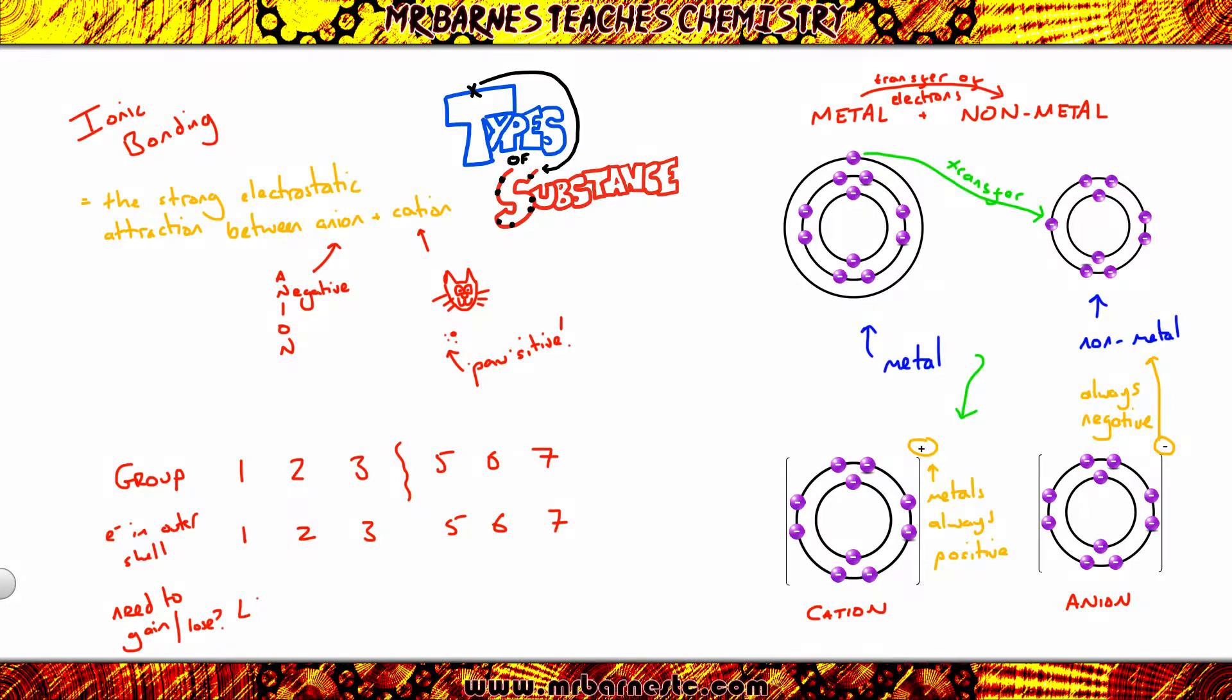So if it's in group one, it's easier to lose one electron. Group two, easier to lose two. Group three, easier to lose three. Then group five, it's easier to gain three. Group six, it's easier to gain two. And group seven, it's easier to gain one.